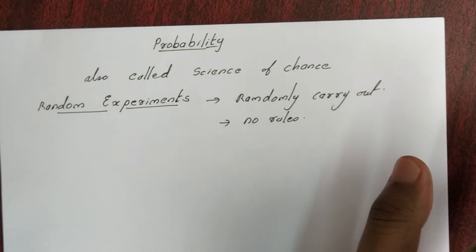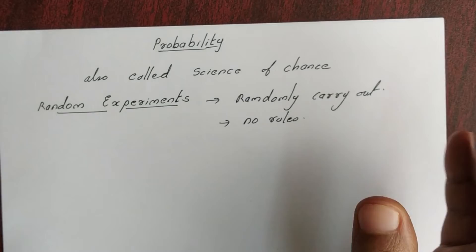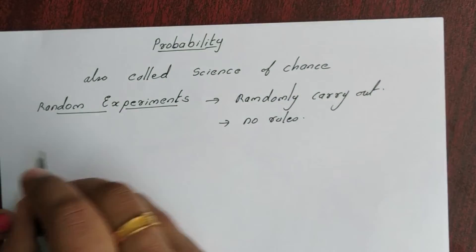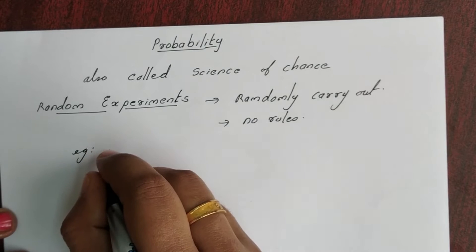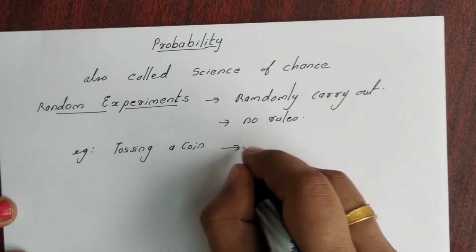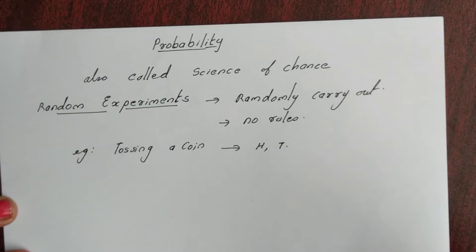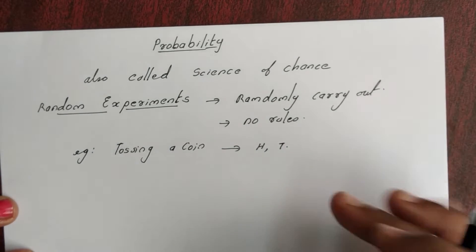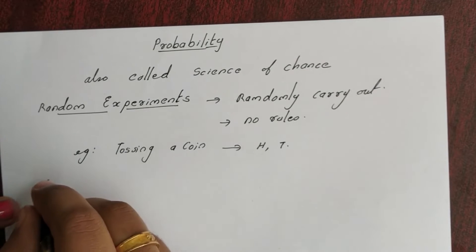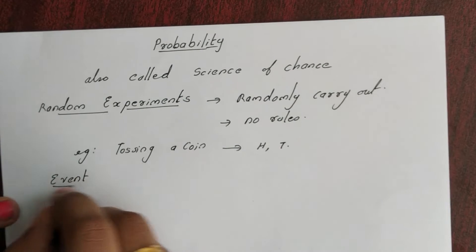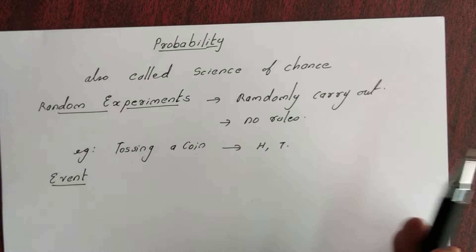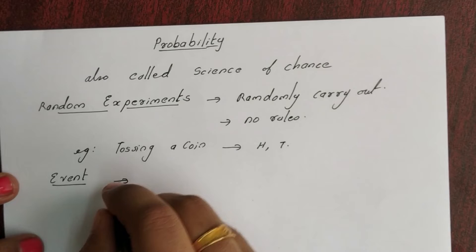We can predict the output of only one experiment — that means two possible outcomes. It is not predictive. For example, we toss a coin; if we toss a coin we get either a head or a tail. That type of experiment we call a random experiment, and we also discuss events.